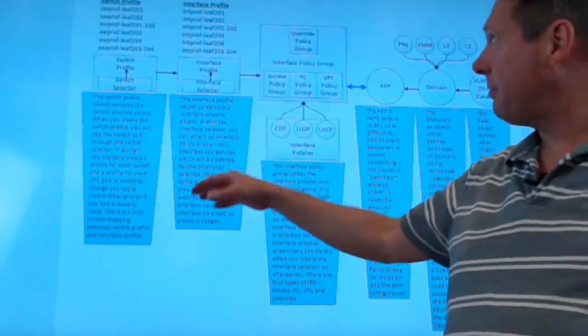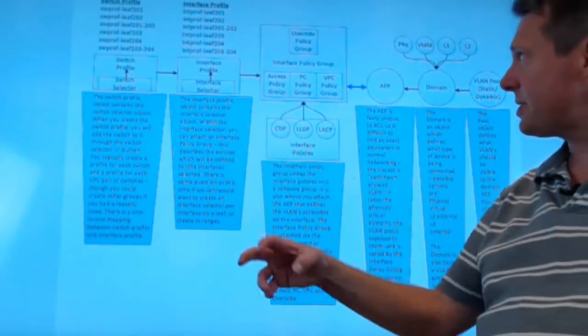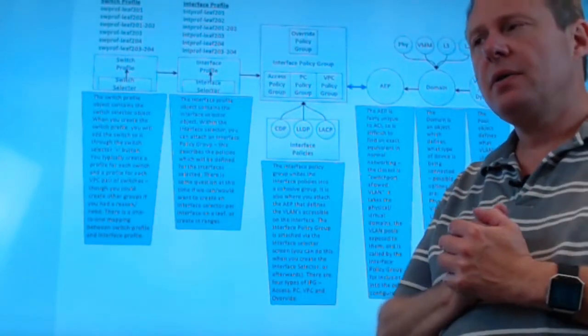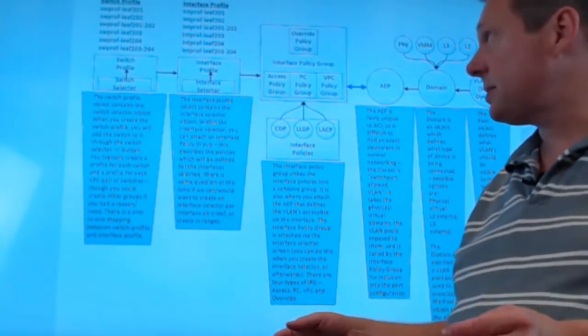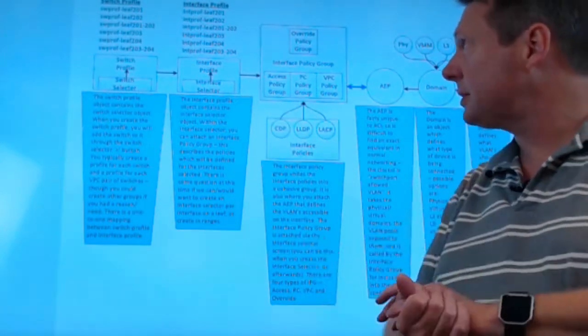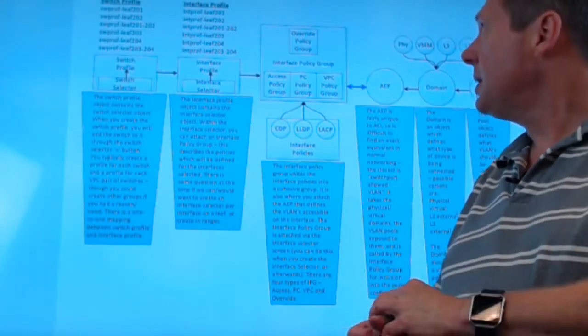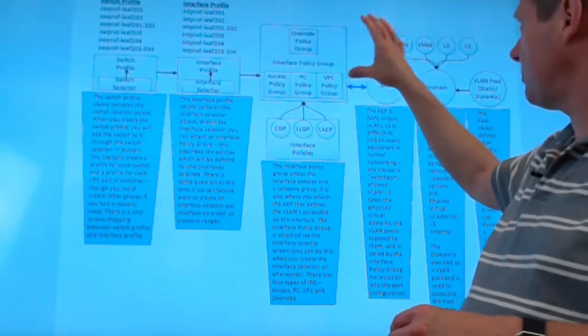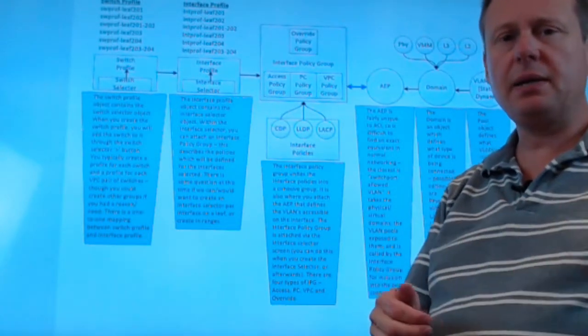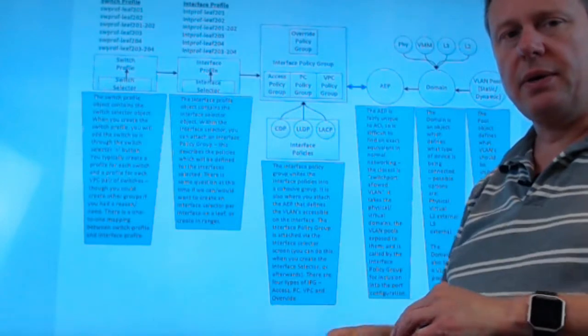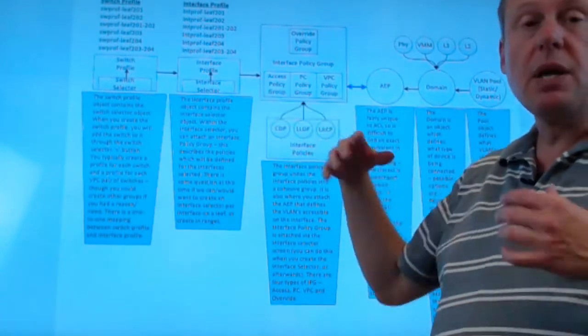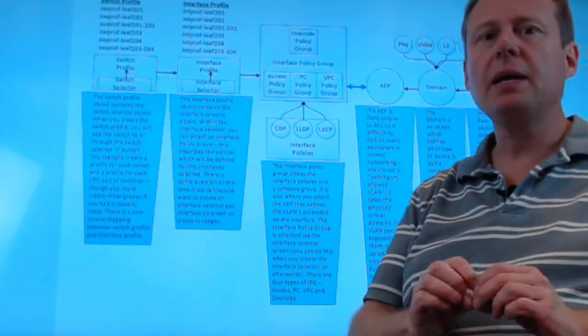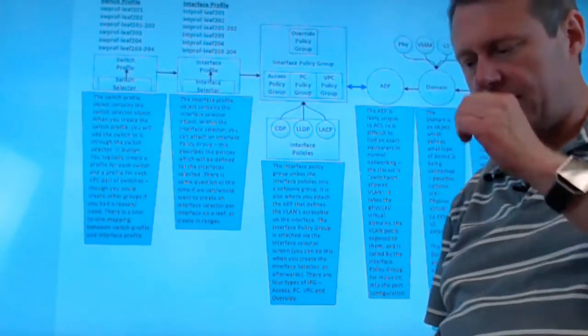We're going to start over here on my right with switch profiles and switch selectors. After your ACI fabric is first built and brought up, one of the first things you usually do is go in and create switch profiles. At least that's one of the first things I usually do. So you go in and you'll see a lot of references to the naming video that I did a little bit ago. So if you don't recognize these names, you can name them whatever you would like, but you might want to go watch that video because naming in ACI is very key and critical to success of adoption.